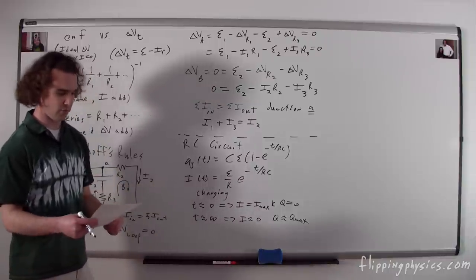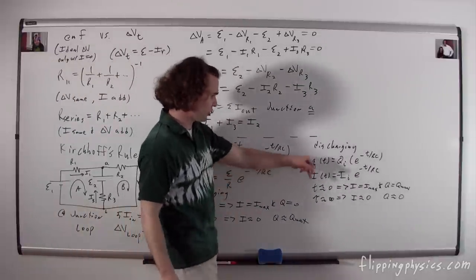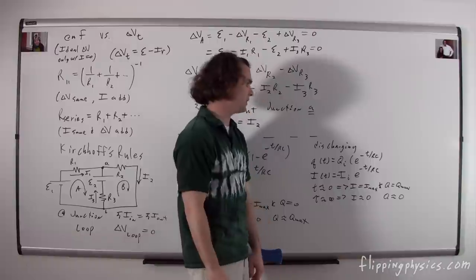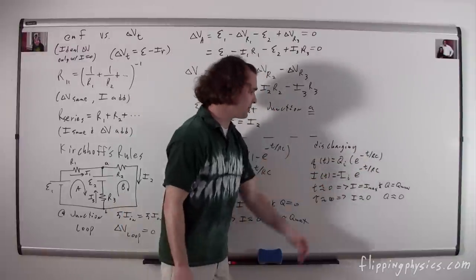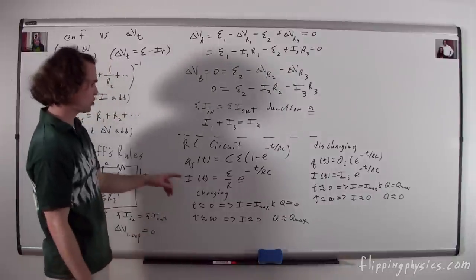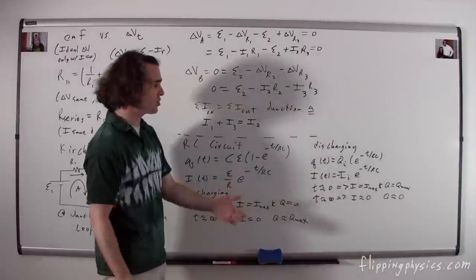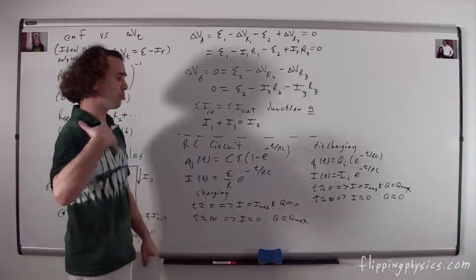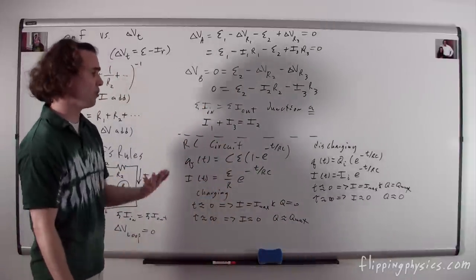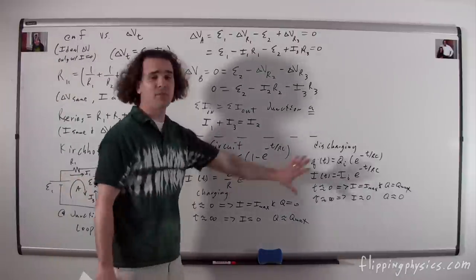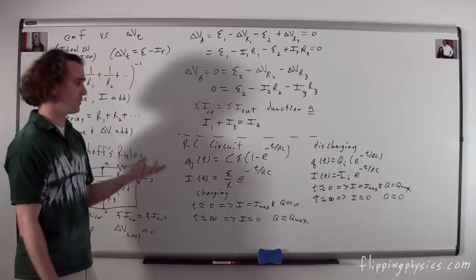When discharging a capacitor through a resistor, the charge as a function of time is Q(t) = Q₀e^(−t/RC), and the current as a function of time is I(t) = −I₀e^(−t/RC). The negative sign is because the current reverses direction during discharge. At t = 0, both charge and current are at maximum. Both decrease to zero as time goes to infinity. You should know how to derive these equations, know the limits, and be familiar with the shapes of these graphs.